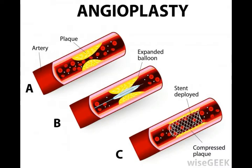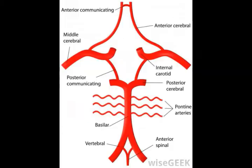The vertebral arteries connect to the basilar arteries. These vessels supply blood to the brain stem, the rear of the cerebrum, and part of the cerebellum. The brain stem coordinates movements on the left and right sides of the body. The cerebrum is associated with judgment, perception, decision making, thought, and imagination, and the cerebellum controls balance and movement.